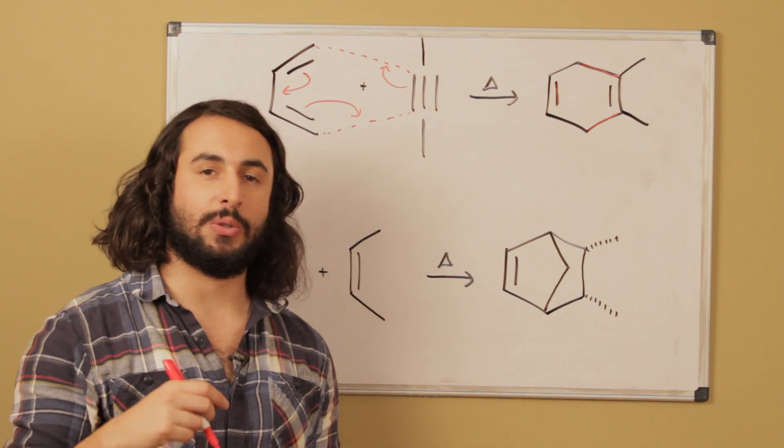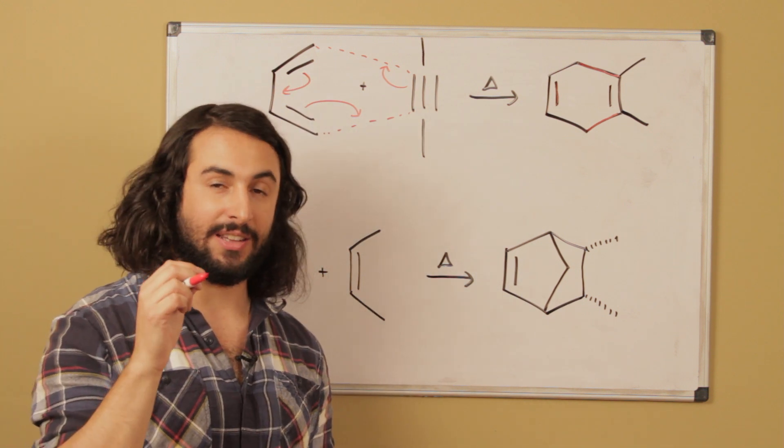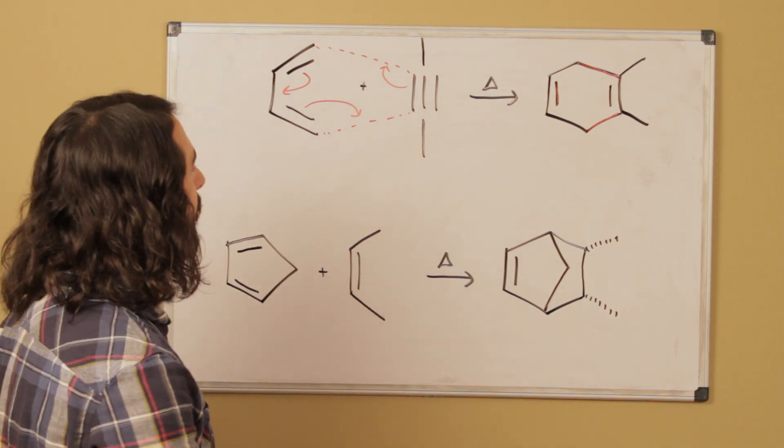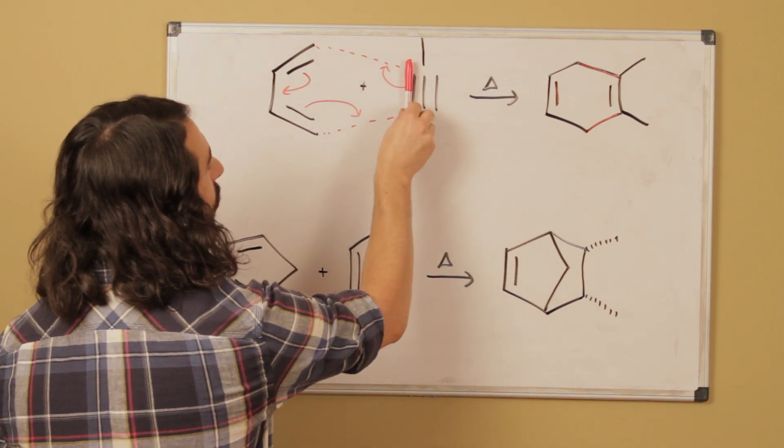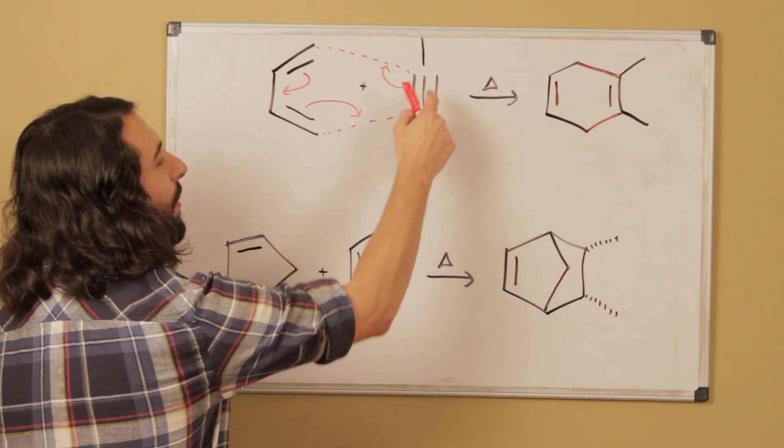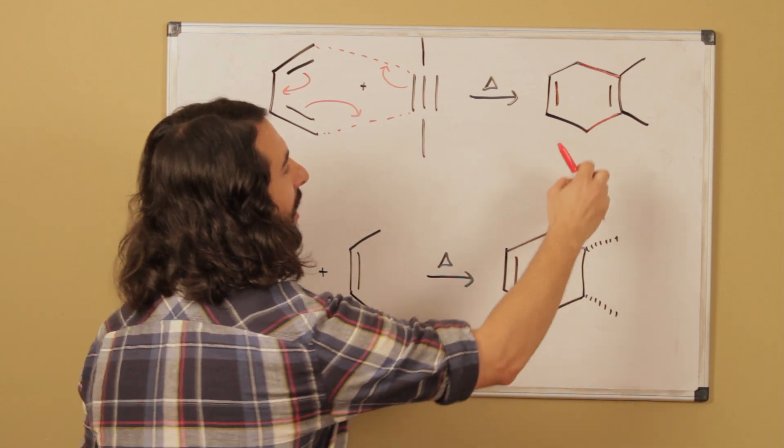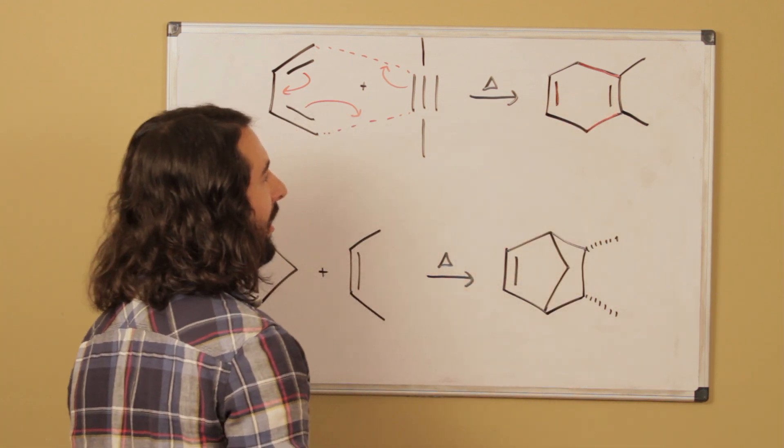But the interesting thing about using an alkyne as a dienophile in a Diels-Alder is that we're only utilizing one of these pi bonds, the other pi bond is going to remain intact and so that's why we still see a pi bond right there.